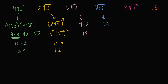What is three square roots of three, squared? It's going to be three squared, which is nine, times the square root of three squared. The square root of three times the square root of three is three. So it's nine times three, or 27. And what is five squared? That's pretty straightforward — that's going to be 25.